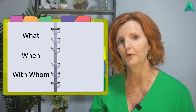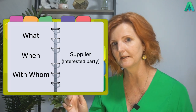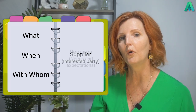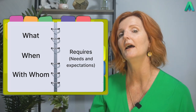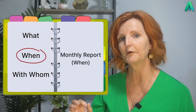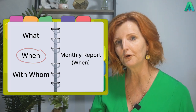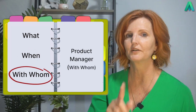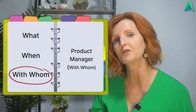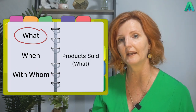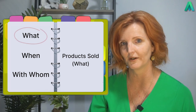For example, you may have identified a supplier as an interested party that requires — that's your needs and expectations — a monthly report, which is the when, sent through to the product manager, which is with whom, on the number of sales you have made of the product they supply to you, which is the what.